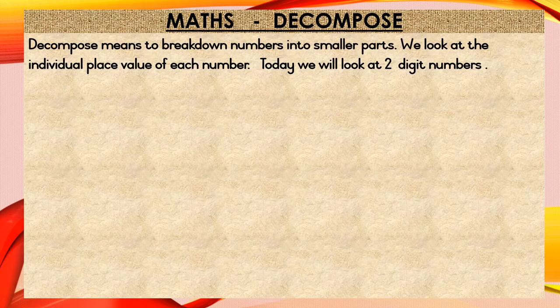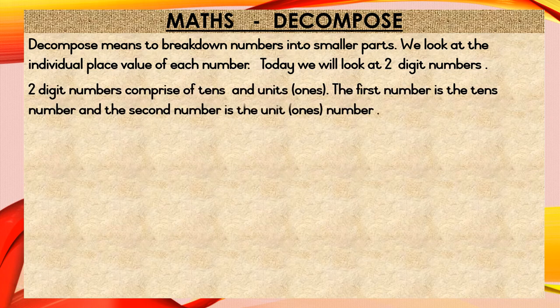Decompose means to break our numbers into smaller parts. We look at the individual place value of each number. Today we will look at two digit numbers. Two digit numbers comprise of tens and units. Another name for units is ones. The first number is the tens number and the second number is the unit number.